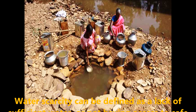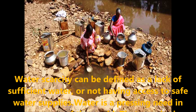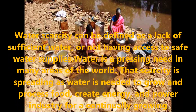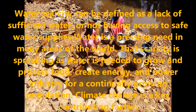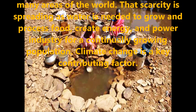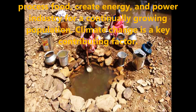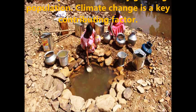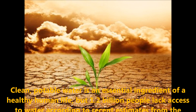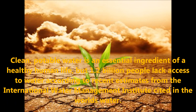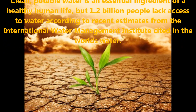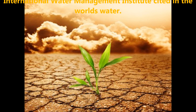Children, let us understand what is water scarcity. Water scarcity can be defined as a lack of sufficient water, or not having access to safe water supplies. Water is a pressing need in many areas of the world. The scarcity is spreading as water is needed to grow and process food, create energy, and power industry for a continually growing population. Climate change is a key contributing factor. Clean and potable water is an essential requirement for healthy human life, but 1.2 billion people lack access to water according to recent estimates from the International Water Management Institute.